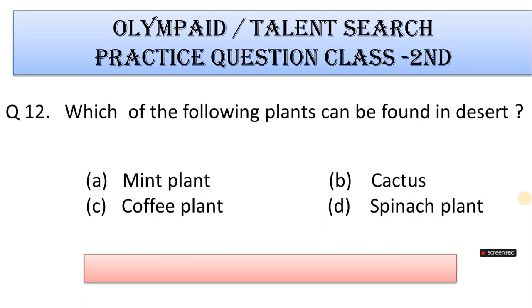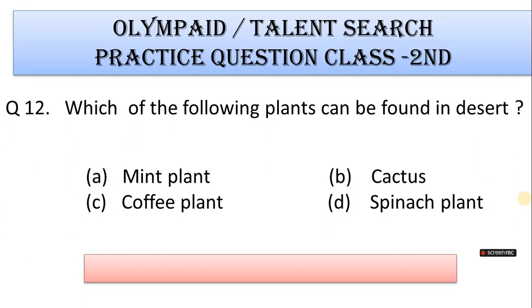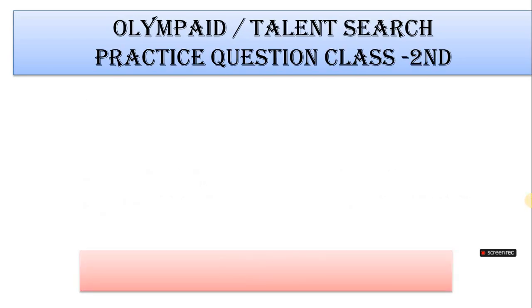Question number 12: Which of the following plants can be found in a desert? A. Mint plant, B. Cactus, C. Coffee plant, D. Spinach plant. Correct answer is Option B. Cactus.